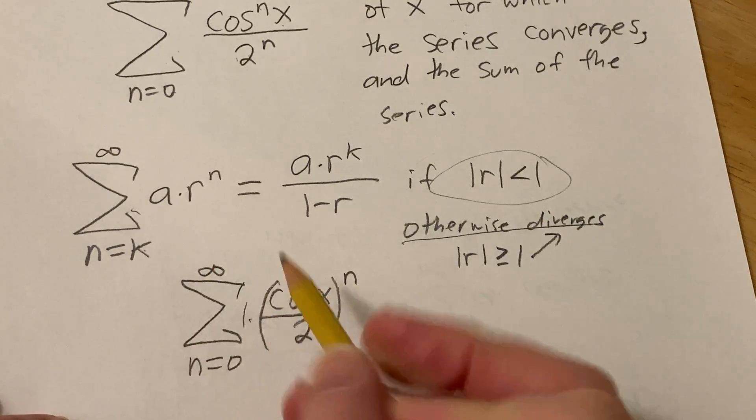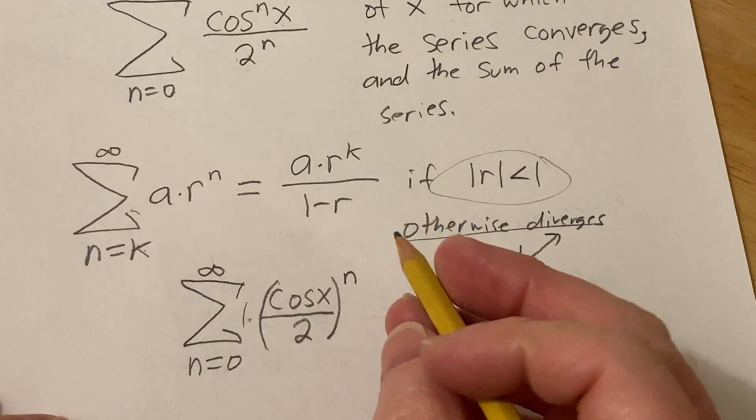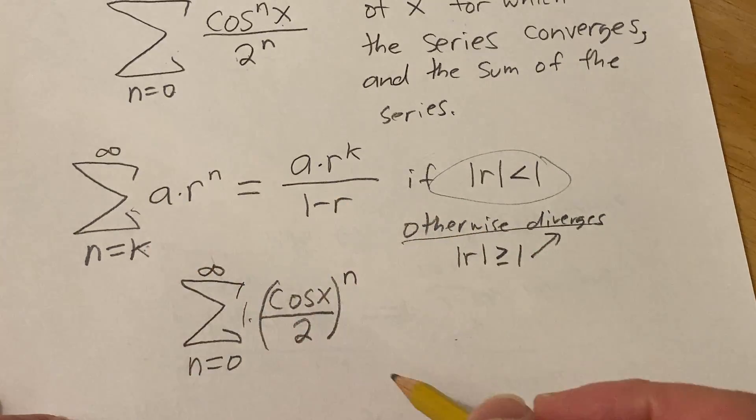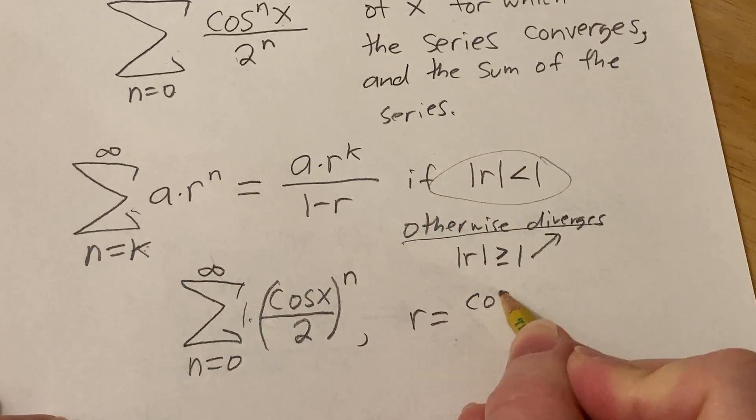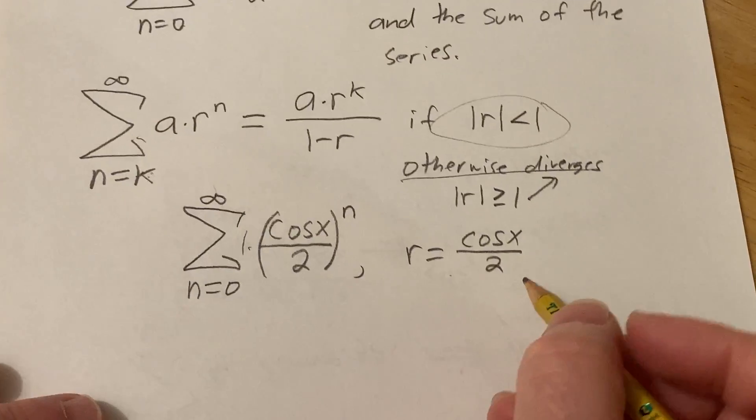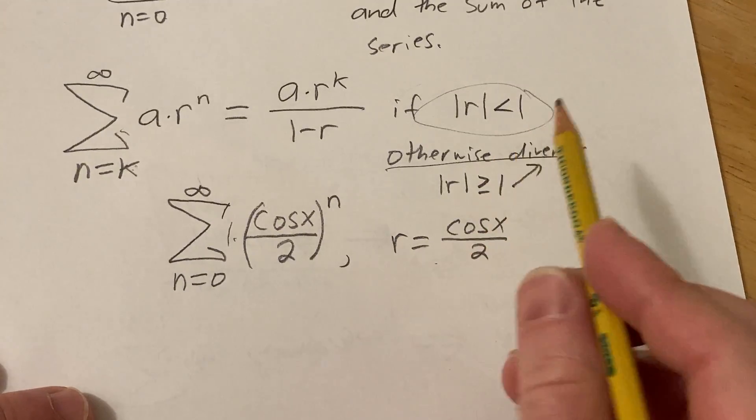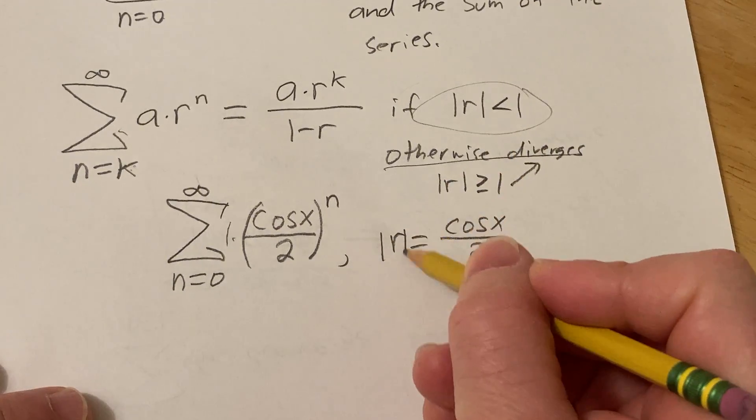Obviously a is 1, right, if you're using matching. And then k is 0, okay, in this formula. And then so r is the cosine of x over 2 here, x is a real number. So we want to make sure it's less than 1, in absolute value, so let's do that.